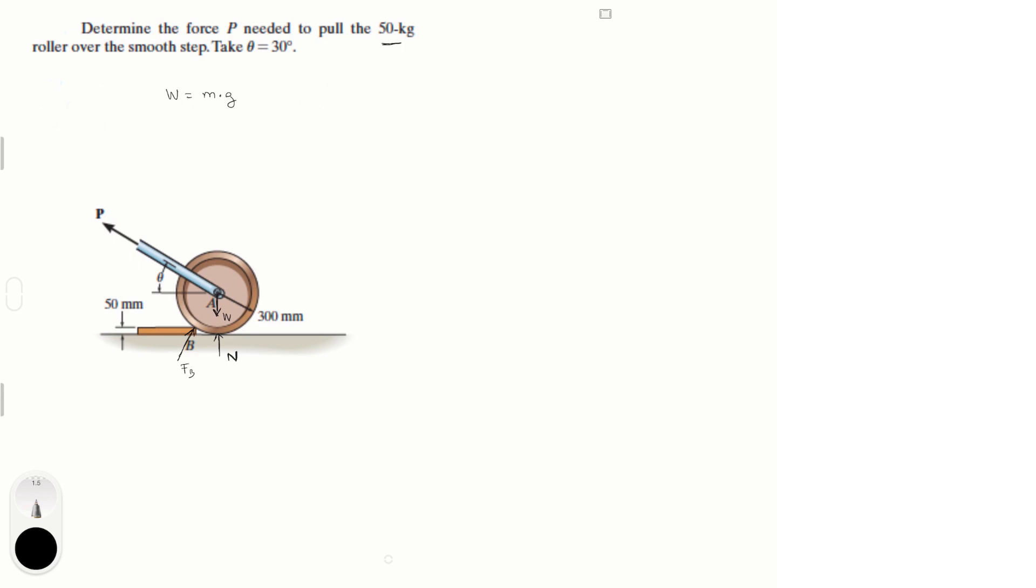Right off the bat I'm going to tell you that the problem is asking for the force needed to pull it over the smooth step. To pull it over the smooth step, that means that at the point where you're going to be pulling it over with enough force in P, the normal is going to be equal to zero.